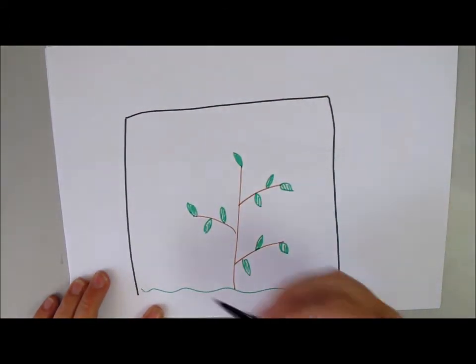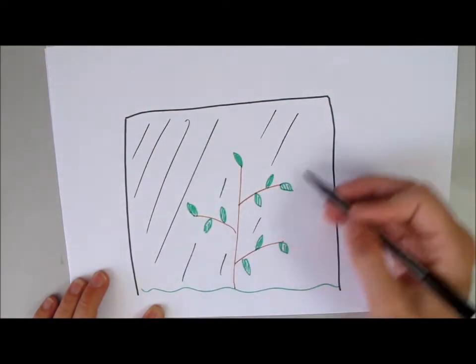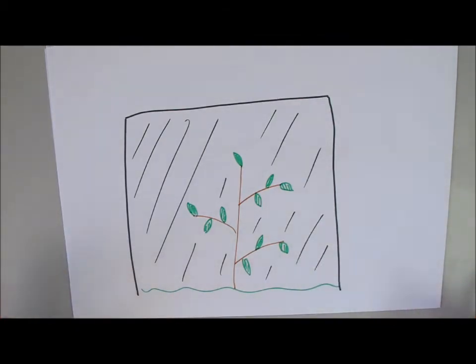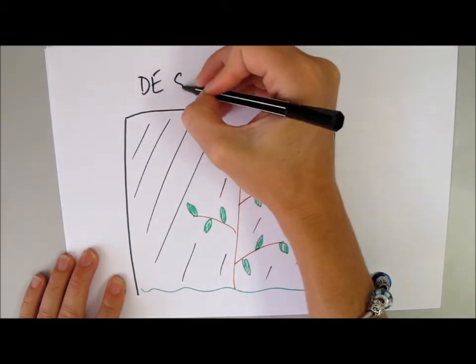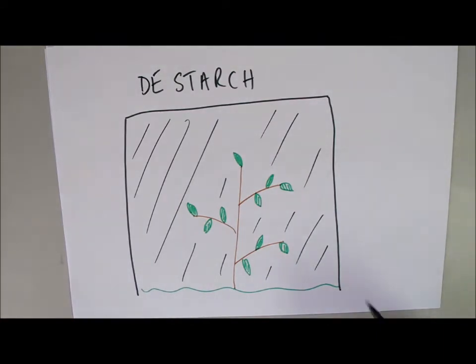So, what we do is we put our plant in a large box or in a dark place, so that no light can get in, so it's entirely dark in here, and we leave it in there for around about 24 hours. Now, what that is going to do is it is going to de-starch the leaves. So, that's going to mean that these leaves, when they come out of this box, will have no stored starch in them.